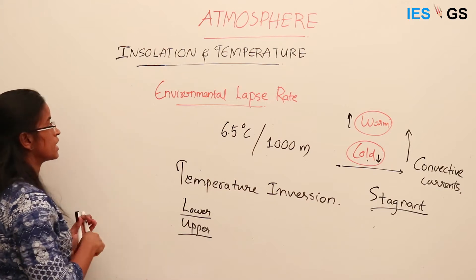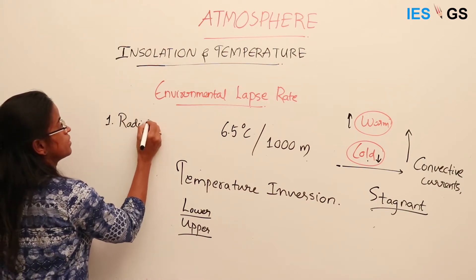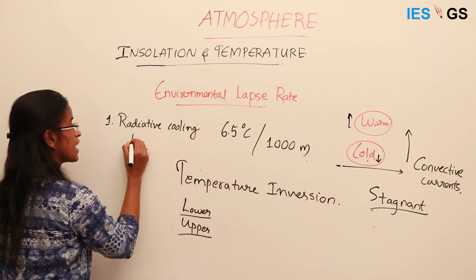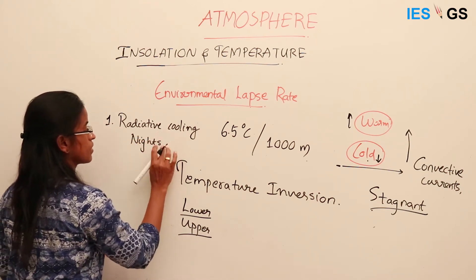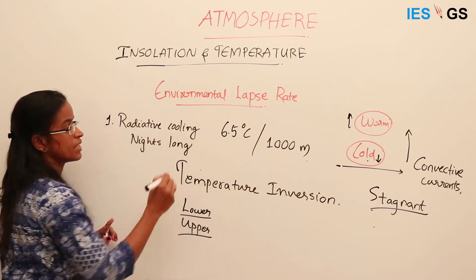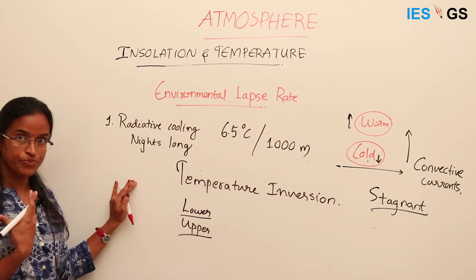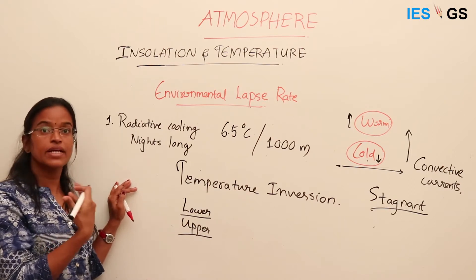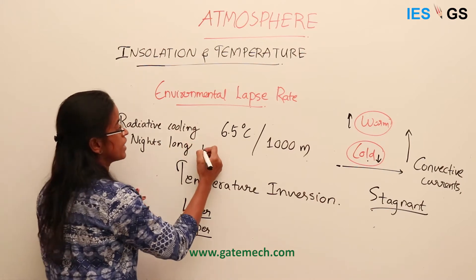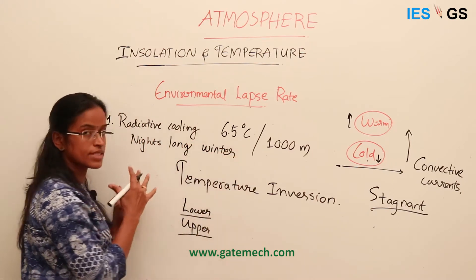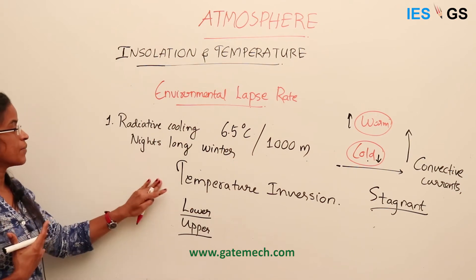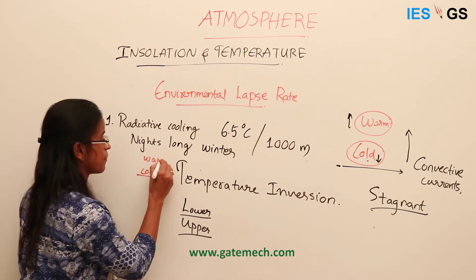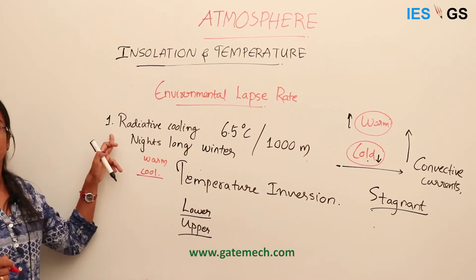The first cause is radiative cooling. This occurs when nights are long, such as during winter. Long nights mean the Earth has more time to radiate its energy — during the day it receives energy, and at night it radiates it. When nights are long during winter, the Earth's surface gets colder, so the surface air becomes cool and temperature inversion occurs. This is a phenomenon common during long winter nights.